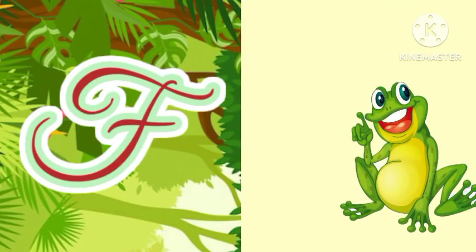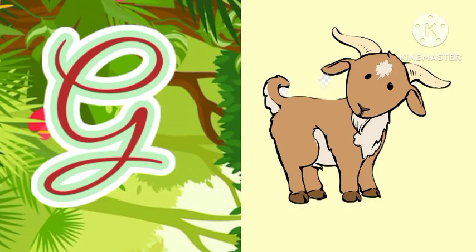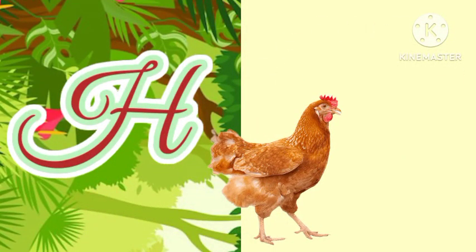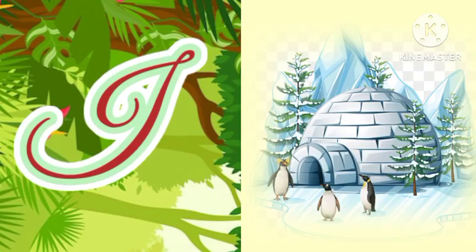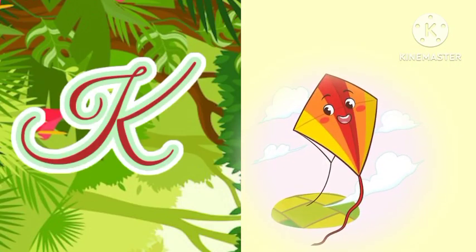G for goat, H for hen, I for igloo, J for juice, K for kite, L for lemon.